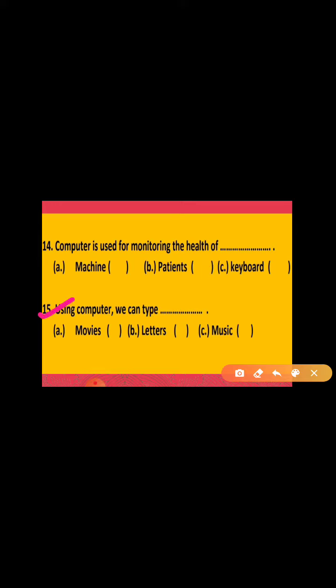15th is, using computer we can type dash. आप computer का यूज करके हम क्या type कर सकते हैं? And your options are movies, letters, and music. So which one is correct in this? Using computer, we can type letters. आप computer का यूज करके letter type कर सकते हैं.